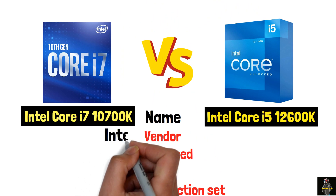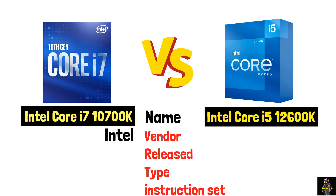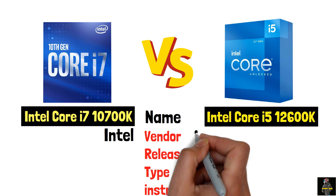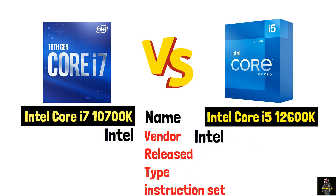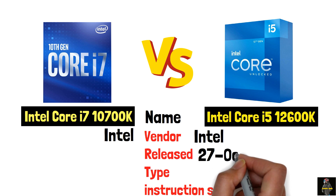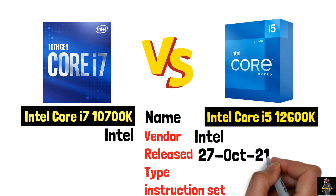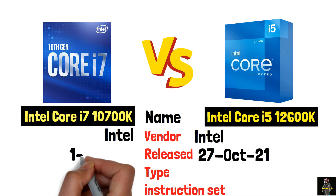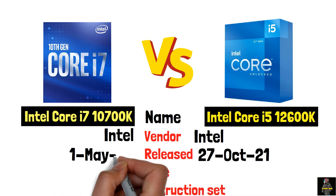Intel. The i5-12600K was released October 27, 2021, while the i7-10700K was released May 1, 2020.